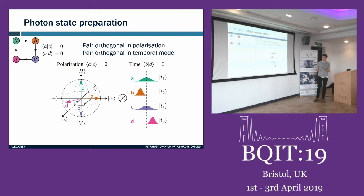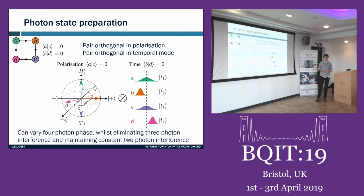State b still overlaps with a and c. State d must be orthogonal to b, so we put it in a different temporal mode completely walked off in time but still overlapping with a and c in polarization. Polarization-wise d rotates around the equator of the Bloch sphere, which varies the four-particle phase by varying the argument of one edge. We ensure no triad phase contributions since no three states overlap simultaneously, and pairwise distinguishability stays constant throughout.